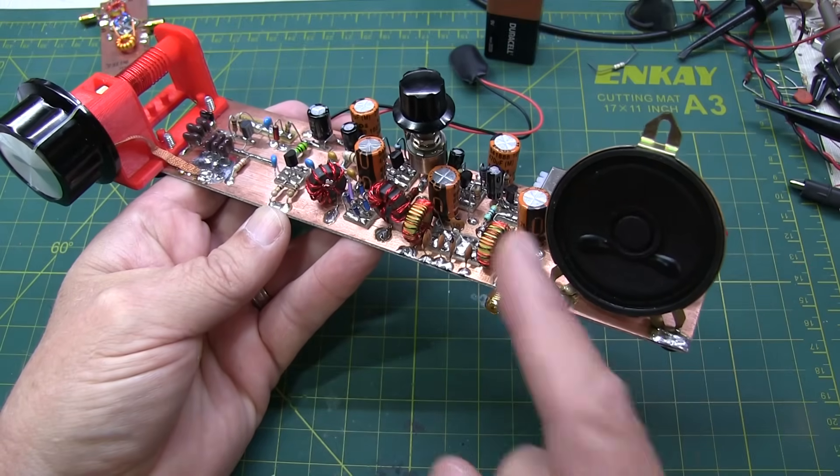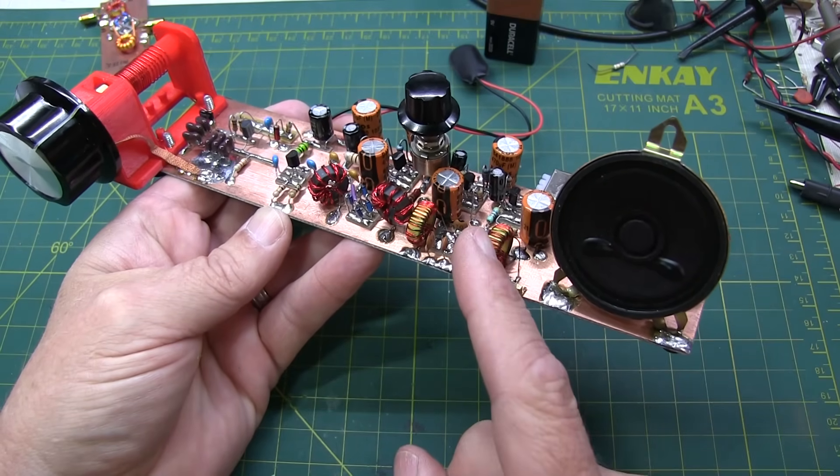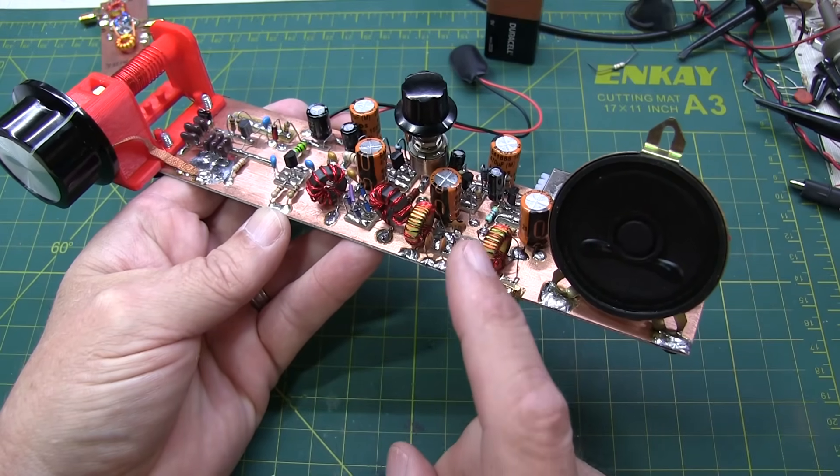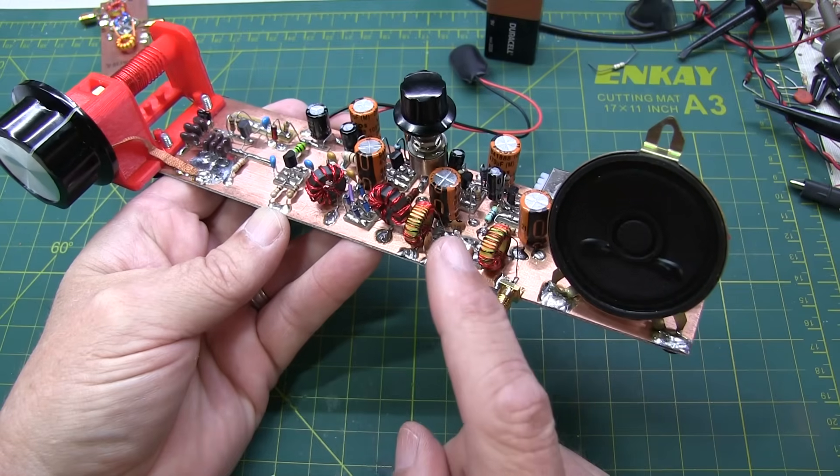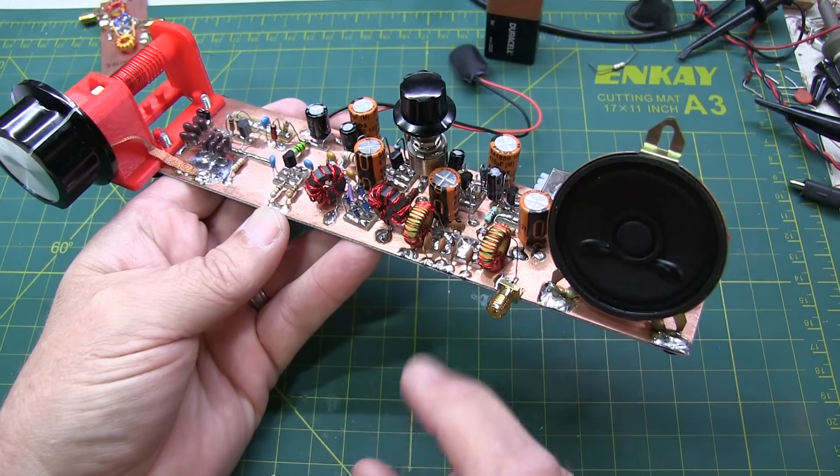In today's video, we're going to talk about this. This is a direct conversion receiver for the 40-meter amateur radio band, and there's a bit of a story behind it, so let's get to it.